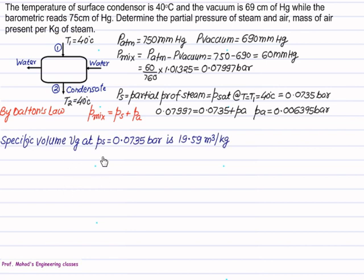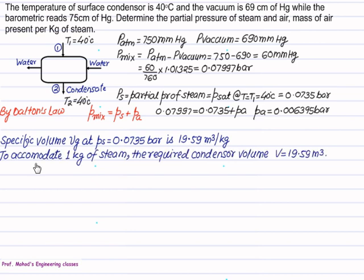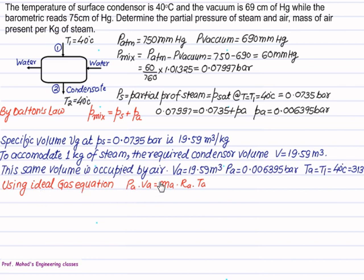The specific volume Vg at PS equals 0.0735 from steam table is 19.59 m³/kg. The specific volume indicates 19.59 m³/kg. So if you want to store 1 kg of steam, we require a condenser shell volume equal to 19.59 m³. And this volume is entirely filled by the steam as well as air. Since we know the partial pressure of air, volume of air, and gas constant of air, we can calculate mass of air for 1 kg of steam. So this same volume is occupied by air also. We can write the volume of air 19.59, but remember it is per kg of steam. Partial pressure of air is 0.006395 bar.